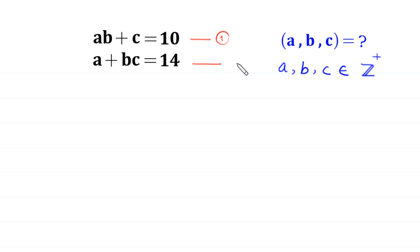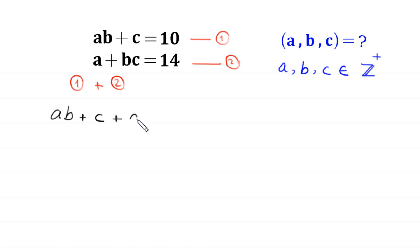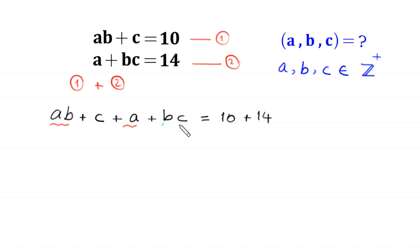Let's call this equation 1 and this equation 2. First, we add these two equations, so this will become a(b + c) + (a + bc) = 10 + 14. We combine these two terms — ab and a — and these two terms — bc and c — so this will become a(b + a) + b(c + c) ... a times (b + a) plus b times (c + c) is equal to 24.